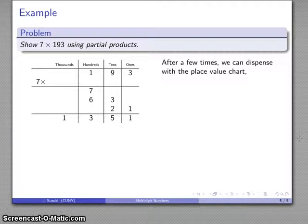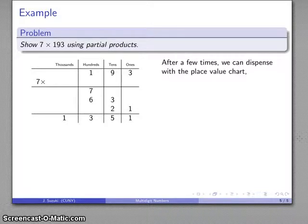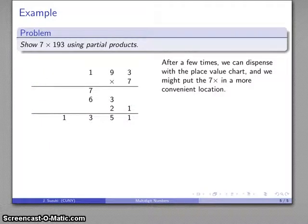And after you do this a couple of times, you don't really need that place value chart. The only reason, the only thing that that place value chart actually adds is it tells you that I'm dealing with thousands, hundreds, tens, and ones, but we knew that anyway because we know how to read the number. And, well, having this seven times way over here is maybe a little inconvenient, so we're going to move that seven over to a more convenient location. And so I might write my partial products in this form.